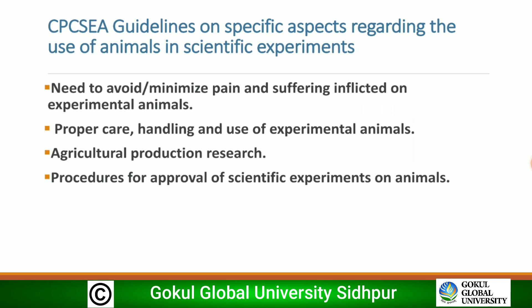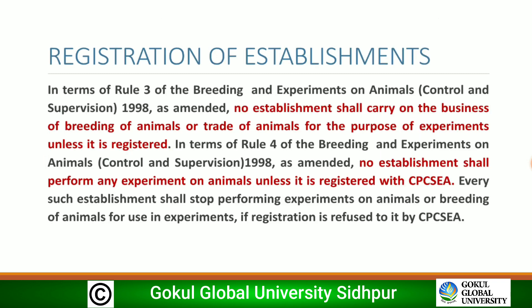CPCSEA guidelines specify the need to avoid or minimize pain and suffering and ensure proper care of experimental animals. For registration, under Rule 3 of the Breeding and Experiments on Animals (Control and Supervision) Rules 1998 as amended, no establishment shall carry on breeding or trade of animals for experiments unless registered. Under Rule 4, no establishment shall perform any experiment on animals unless registered with CPCSEA.